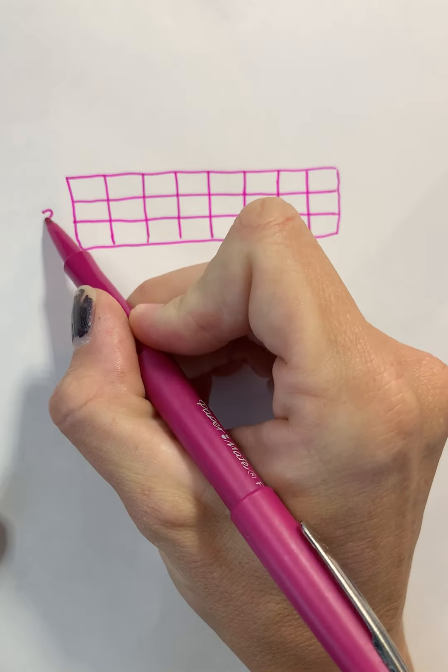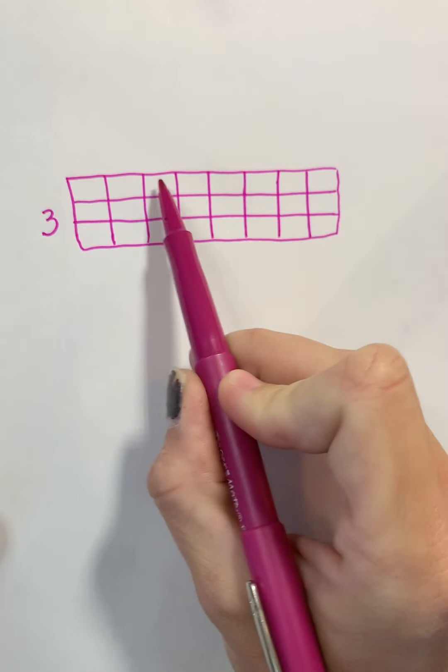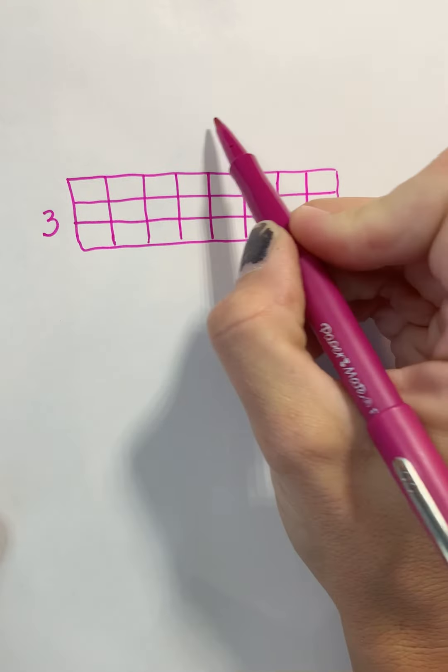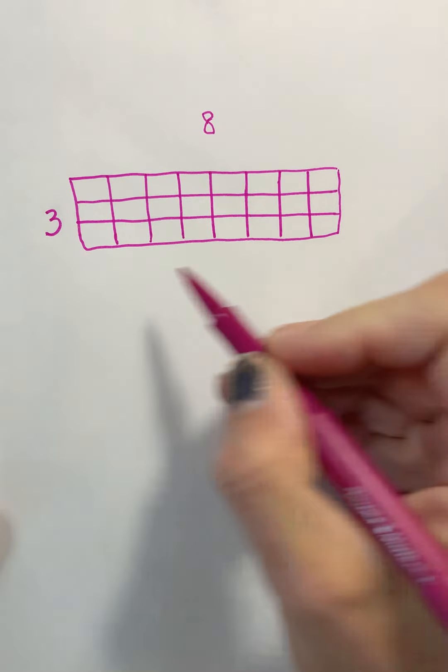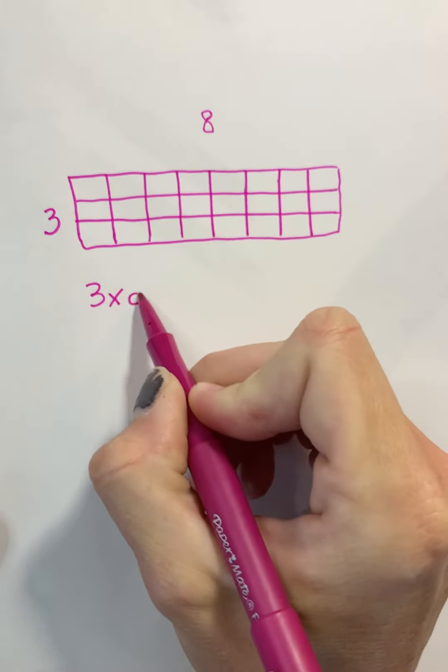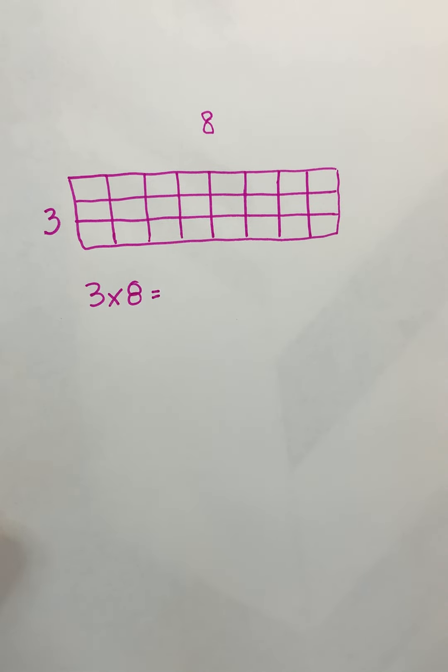So for example, this array is showing me 3 times 1, 2, 3, 4, 5, 6, 7, 8. It's showing me 3 times 8. That is the original array or area model.